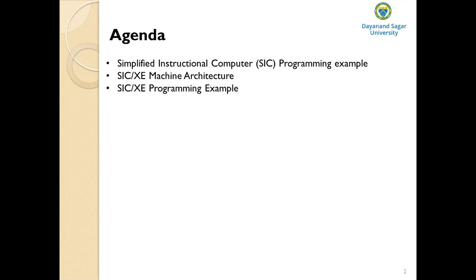SIC assembly directives are pseudo instructions — just instructions to the assembler. We have START, which defines the program starting address; END, which indicates end of program; BYTE, which generates a character or hexadecimal constant using the required number of bytes; WORD, which generates a one-word constant; RESB, which reserves bytes for a data area; and RESW, which reserves words for a data area. We also discussed simple SIC assembly language programming examples covering data movement and arithmetic operations.